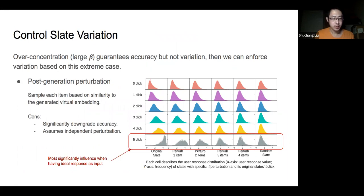Recall that in the over-concentration case, we observe high accuracy but almost no variation even when you choose different examples of latent z. So the idea is to enforce the variation of the output in such extreme case while keeping the accuracy satisfactory. A straightforward solution is to apply post-generation perturbation where each position can stochastically select another item based on their similarity to the generated virtual item embedding.